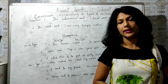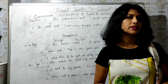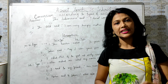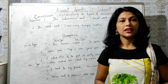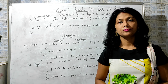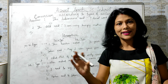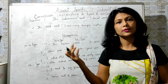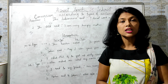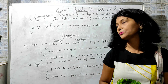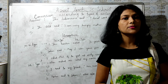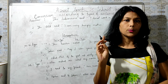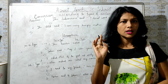Interrogative sentences are of two types: yes/no type — when the answer is yes or no — and WH type — when the answer is in full sentences, like 'What is your name? My name is so and so.' Imperative sentences suggest order, request, command, or proposal.